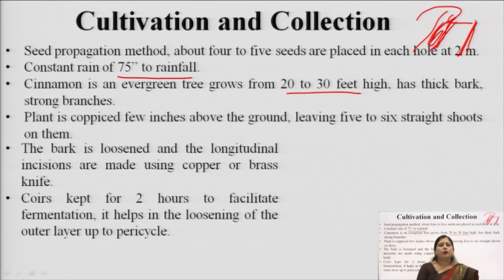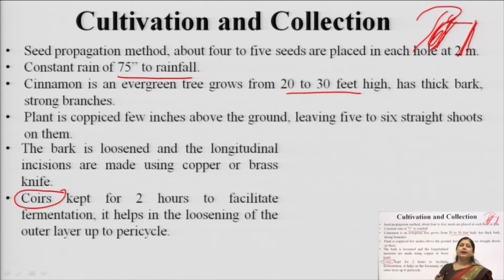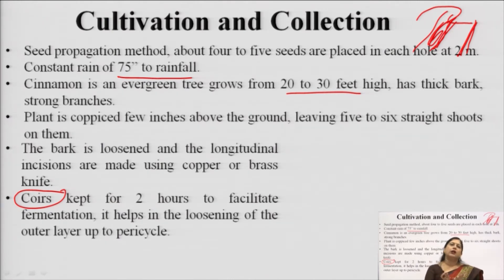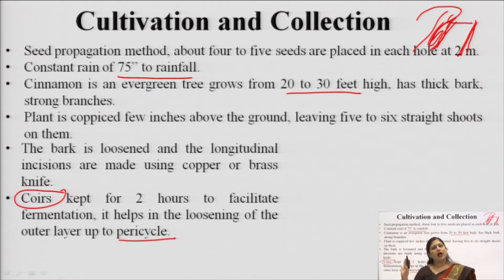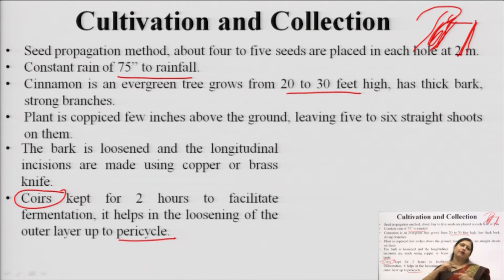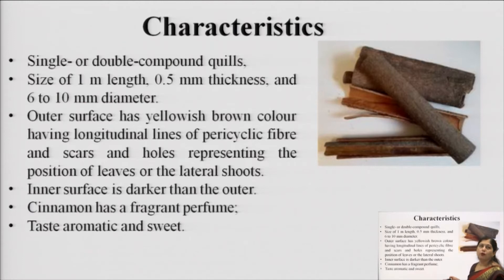The bark pieces are rolled together very fast and kept. This rolling together in the form of coils is required because it initiates the fermentation process, and due to fermentation the outer layer — which is above the pericycle — gets removed very fast. Our biological source states the inner bark is the main drug, so to remove the outer bark, the fresh bark rolls are kept for about 2 hours so that fermentation occurs and the outer bark is removed.